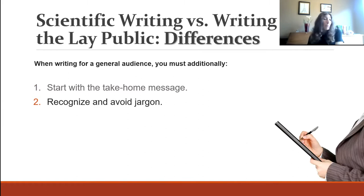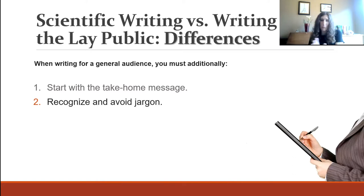Another difference is jargon. You can put jargon in a scientific paper — it's expected and necessary. But when writing for a general audience, you have to think about all the jargon. That doesn't just mean technical terms like 'autologous tumor-bearing' — there's also a way scientists speak that sounds like jargon to a lay public. You have to recognize and avoid that scientist-speak.